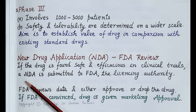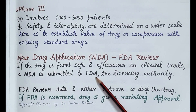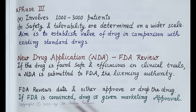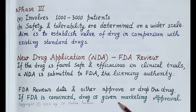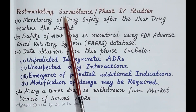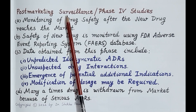If the new drug is found to be safe and efficacious in clinical trials, a New Drug Application (NDA) is submitted to the FDA. The FDA reviews the data and either approves or drops the drug. If the FDA is convinced, the drug is given marketing approval, manufactured at large scale, and marketed for use.